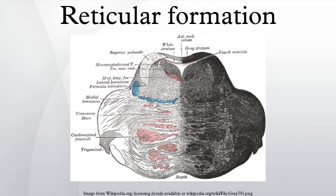Cardiovascular control: the reticular formation includes the cardiac and vasomotor centers of the medulla oblongata. Pain modulation: the reticular formation is one means by which pain signals from the lower body reach the cerebral cortex. It is also the origin of the descending analgesic pathways. The nerve fibers in these pathways act in the spinal cord to block the transmission of some pain signals to the brain.